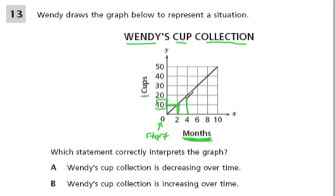At four months, what's happening? Well now we're at 20 cups. At six months, we're at 30 cups. At eight months, we're at 40 cups.